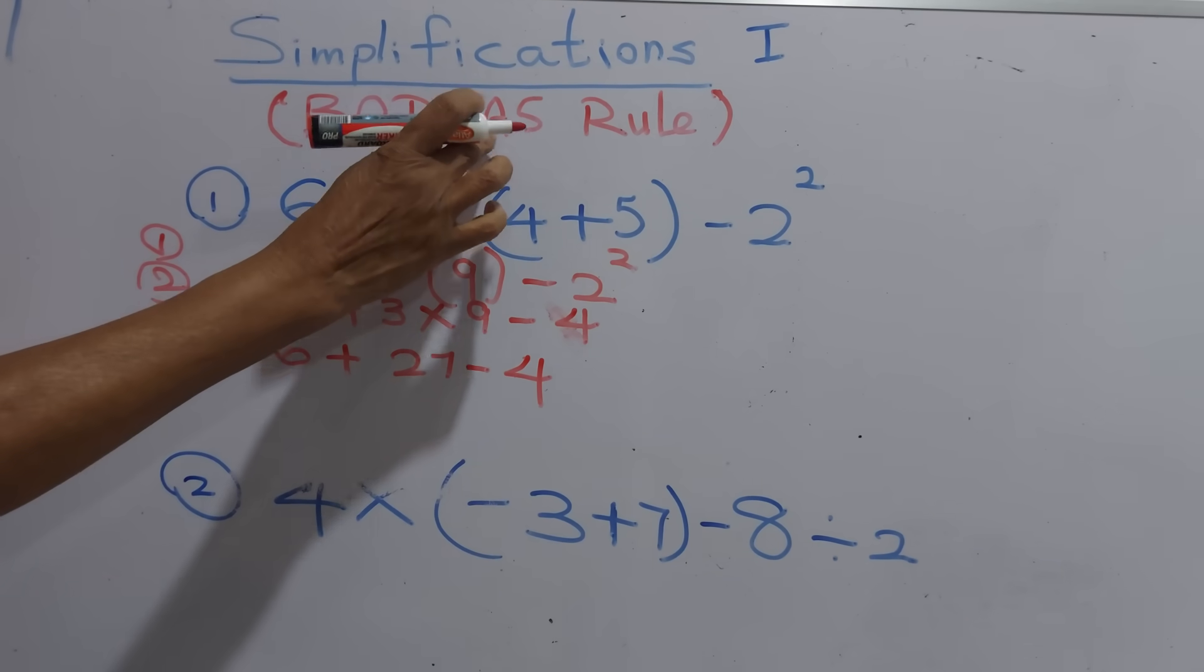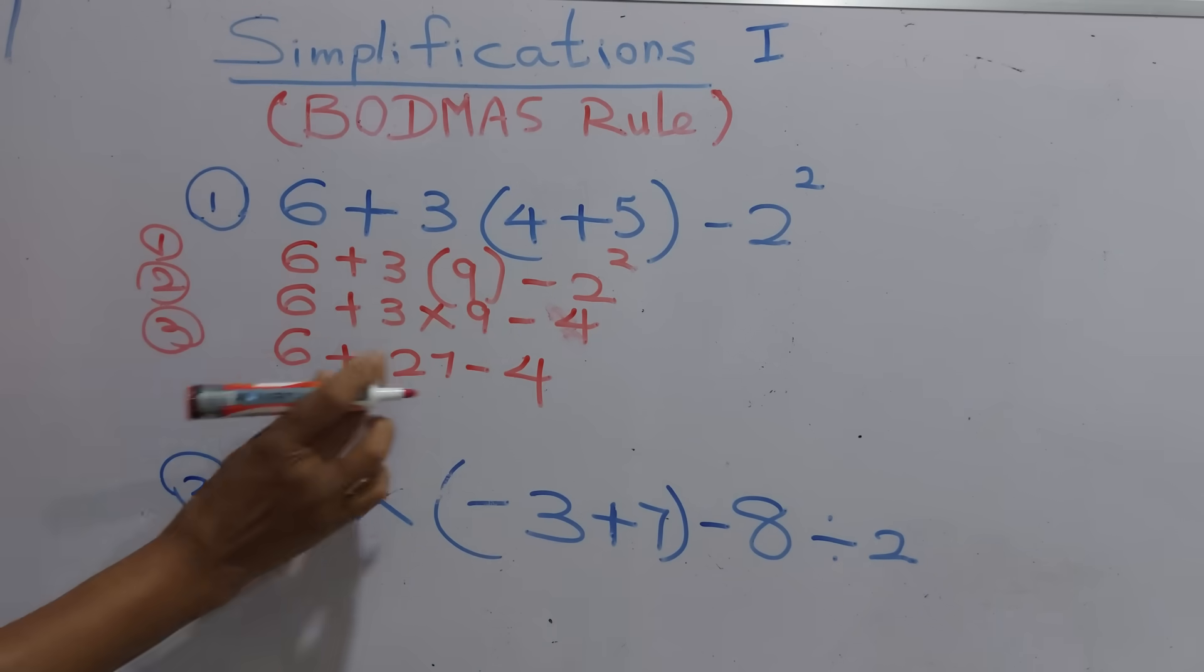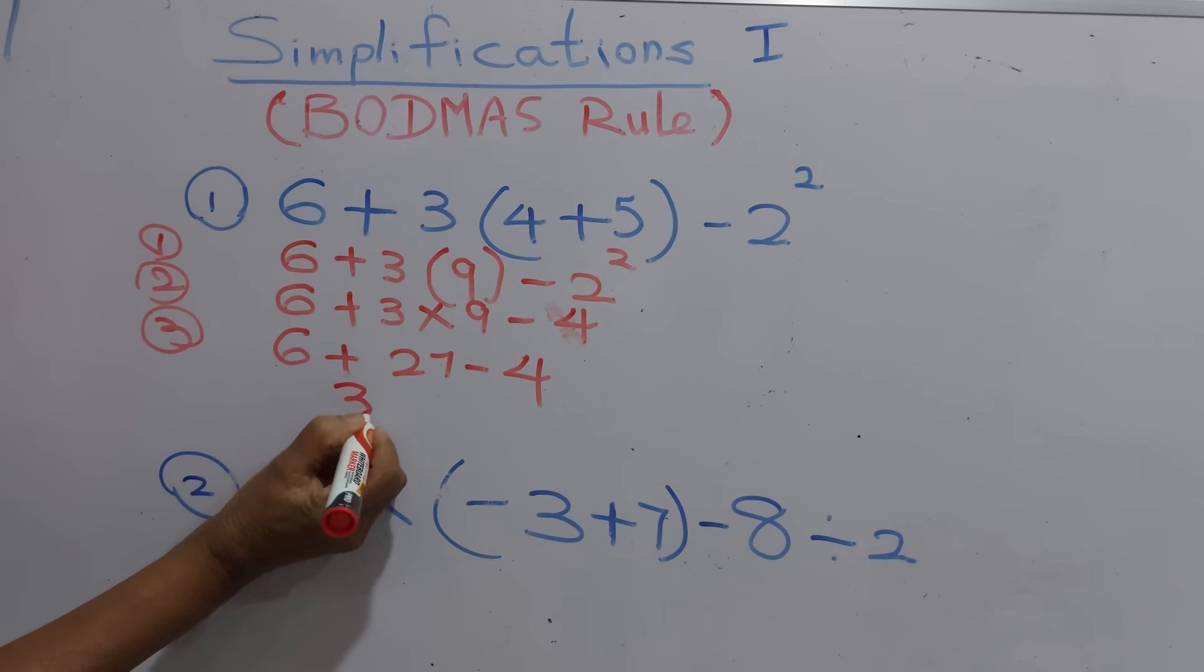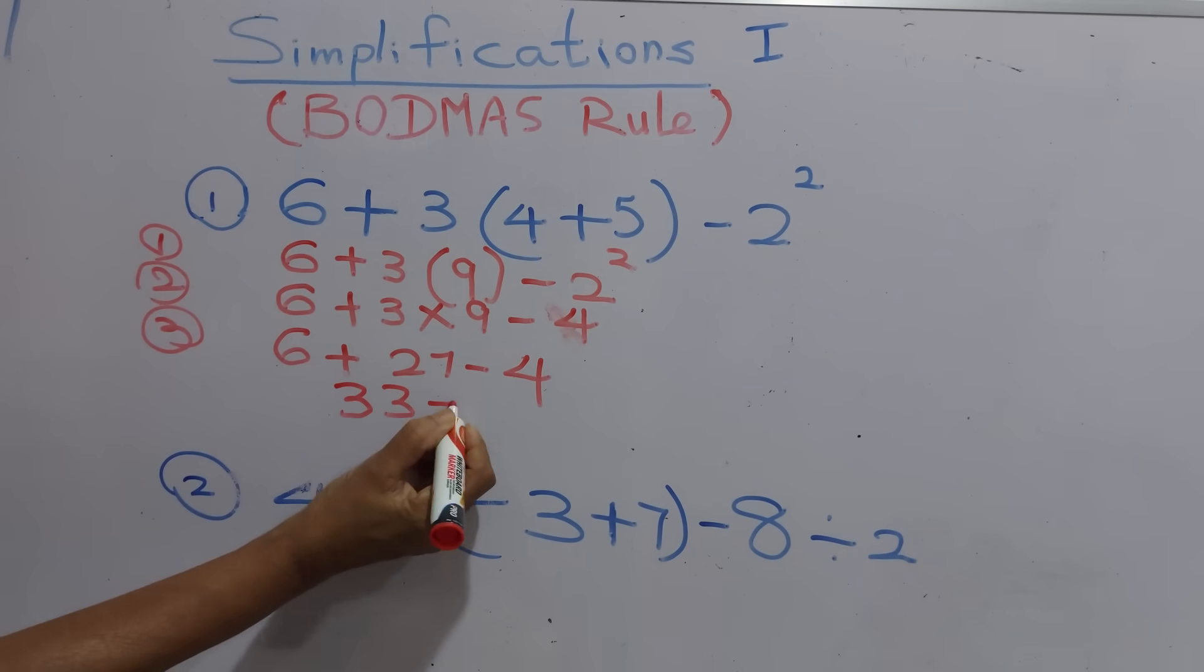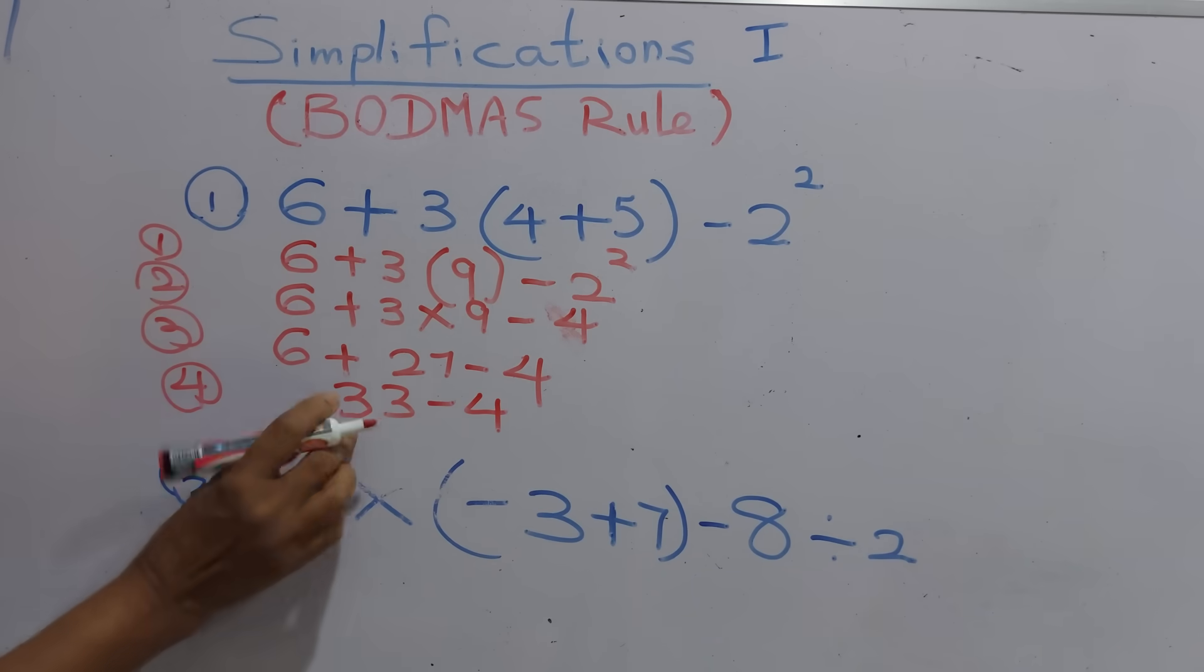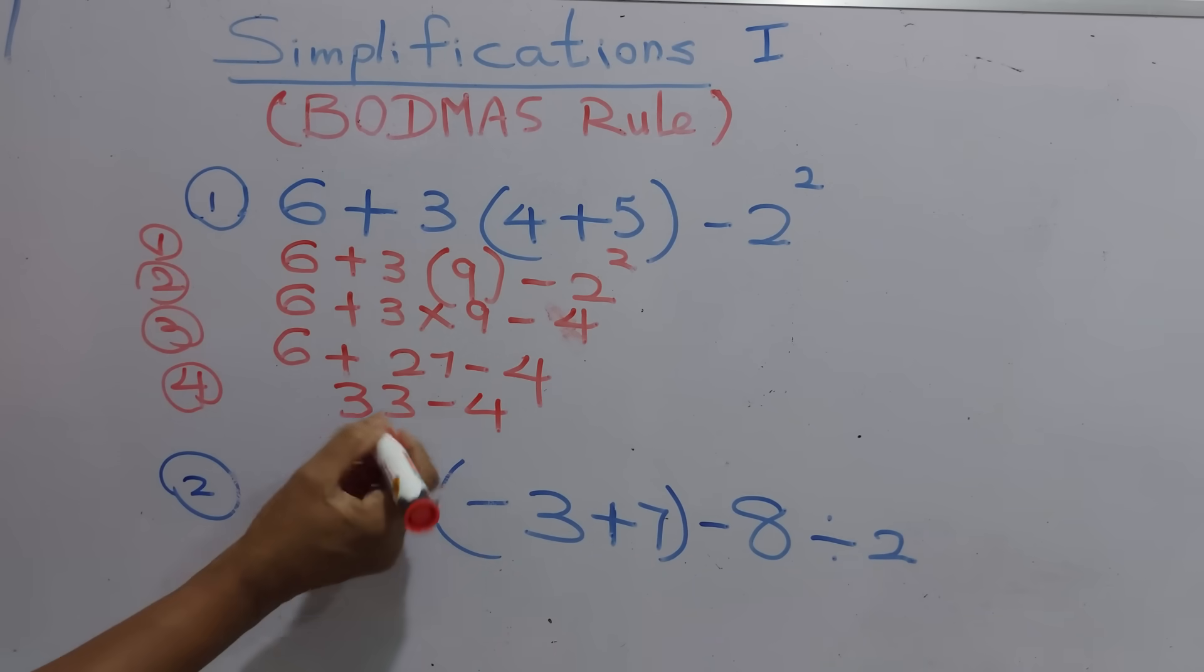Now the sum is like this. That is multiplication, then add. For addition, you have to add this 2 together. 27 and 6, what is the answer? 33. So 33 subtract 4. That is the fourth step.